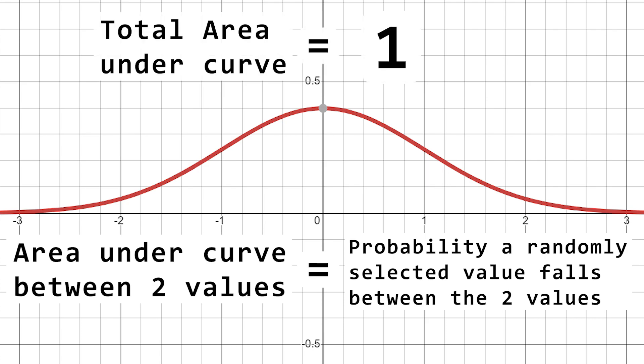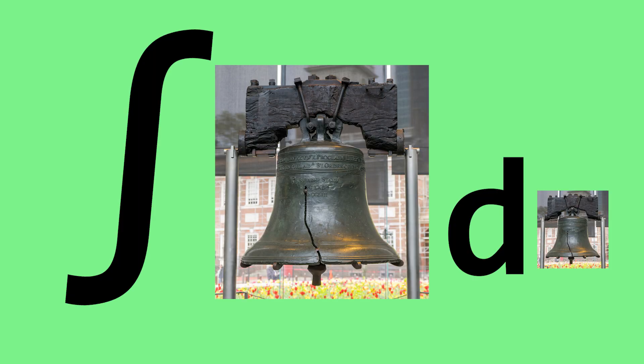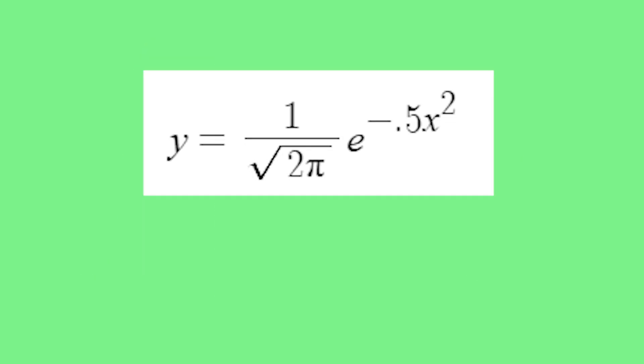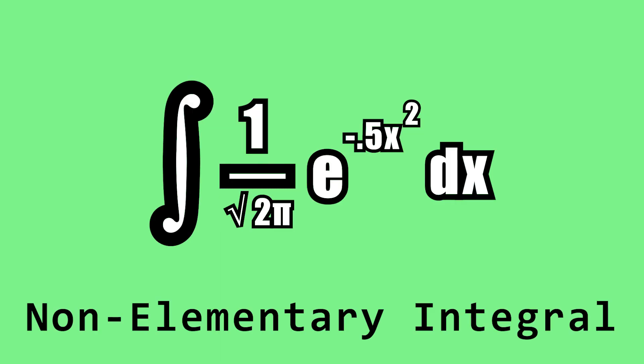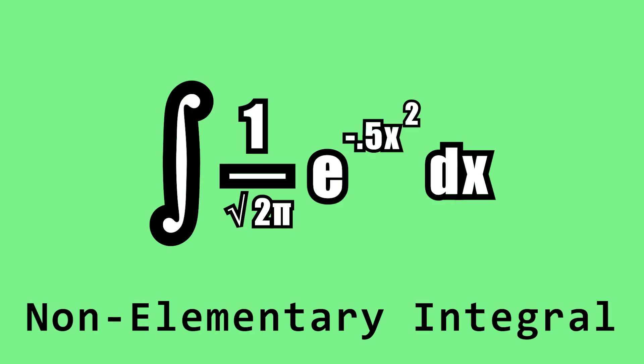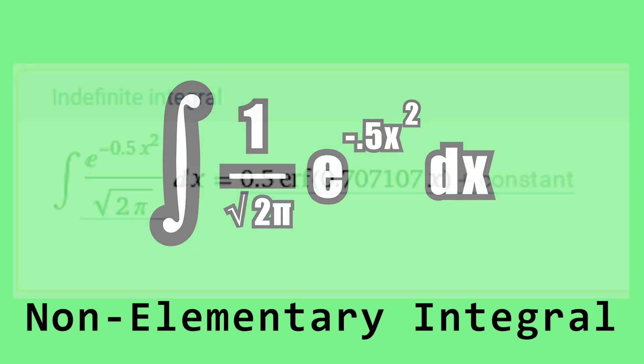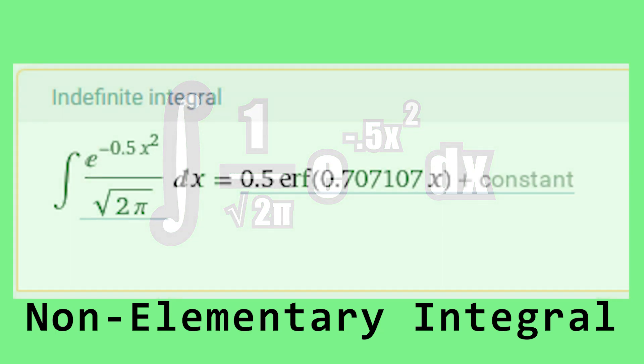Because the area under the curve represents the probability, the total area underneath the entire curve must be 1. Now, those of us who are versed in calculus have their integral bells ringing right now. So, for those of you who know what you're doing, go ahead. Find me the antiderivative. It's okay. I'll wait. Psyche! I won't, because you can't. This is a non-elementary integral, which means it doesn't have an antiderivative. Or, rather, it doesn't have a usual antiderivative.